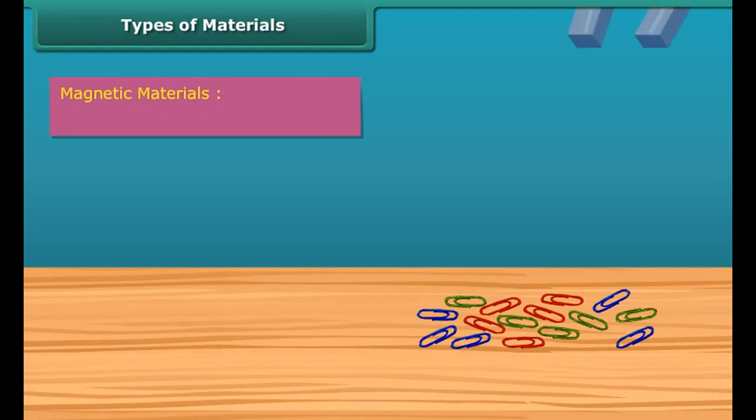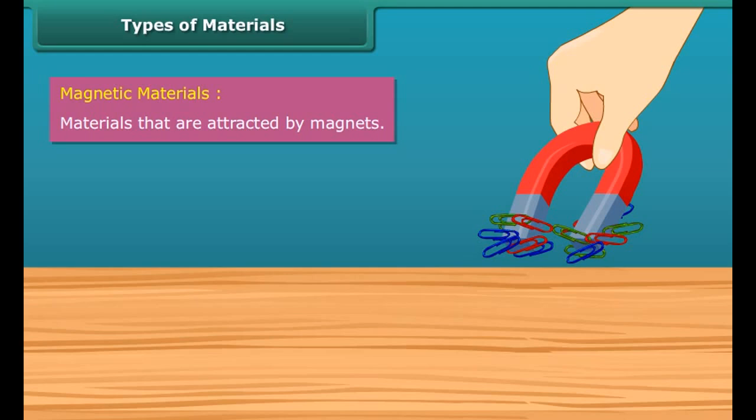Artificial magnets come in different shapes. For example, bar magnet, horseshoe magnet, etc.